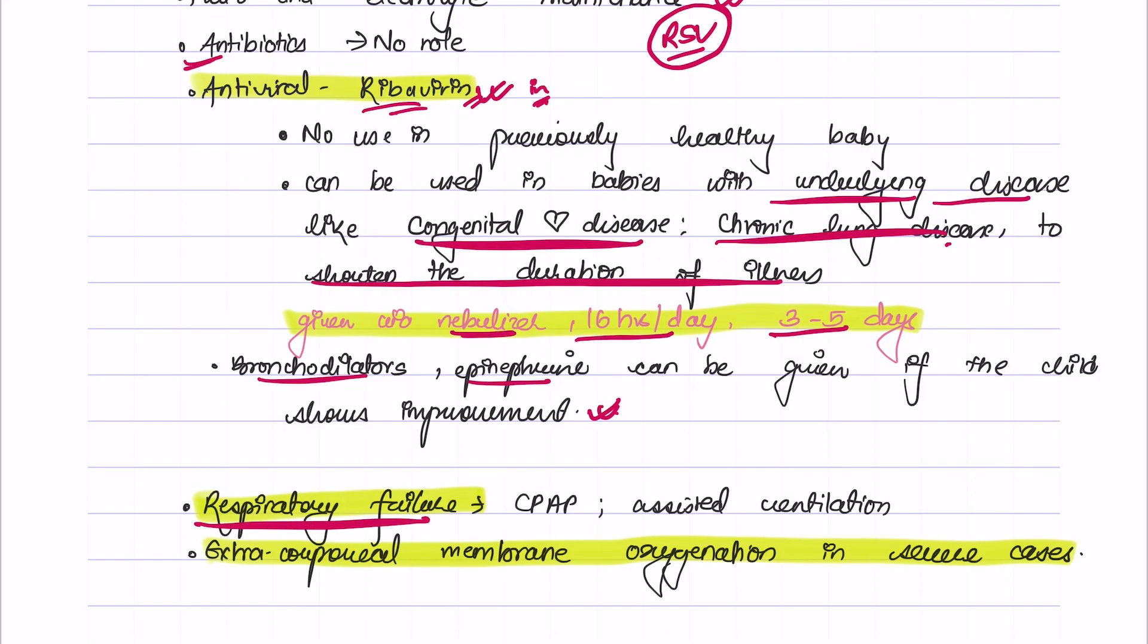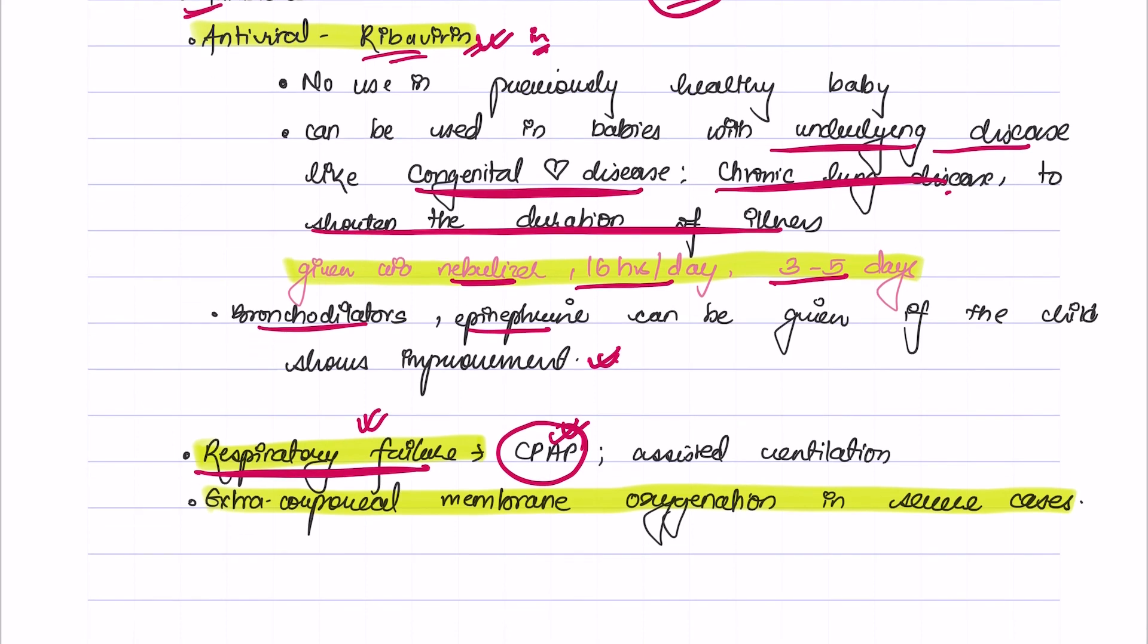In cases of respiratory failure, which is seen in severe cases of bronchiolitis, continuous positive airway pressure may also be given and assistive ventilation may also be required. Extracorporeal membrane oxygenation is also given in severe cases.